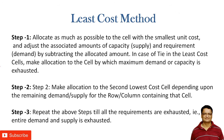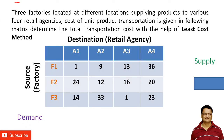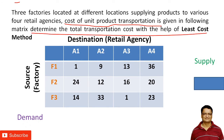We are going to use the least cost method to get the basic feasible solution for the problem. Here is an example: there are three factories located at different locations supplying products to four retail agencies. The cost of unit product transportation is given in the following matrix, and we have been asked to determine the total transportation cost using the least cost method.